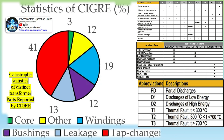DGA is performed on an annual basis to determine the levels of gas dissolved in the oil. However, one in three transformer failures occur within 12 months of testing, sometimes due to gases going undetected between testing cycles. Therefore, online DGA monitoring provides a continuous look at the gases in the main tank.